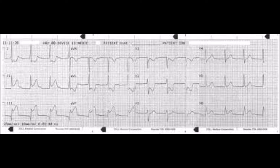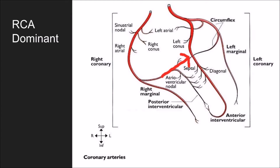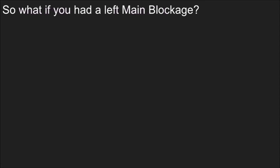A great example is the inferior wall MI — you see elevation in II, III, and AVF with reciprocal depression in I and AVL. Then in V1, V2, and V3 you have ST segment depression that, if you flip the ECG upside down and backwards and hold it up to a light, looks like a STEMI. Technically it's an inferior and posterior wall MI, but there was only one blood vessel blocked. If the entirety of that posterior wall is showing up, this person may have been right coronary artery dominant, with an RCA that wrapped all the way to the back of the heart.